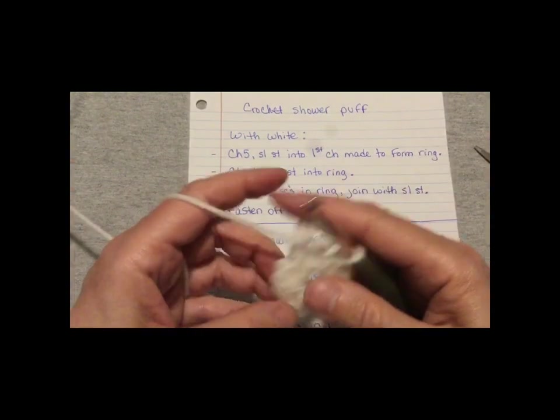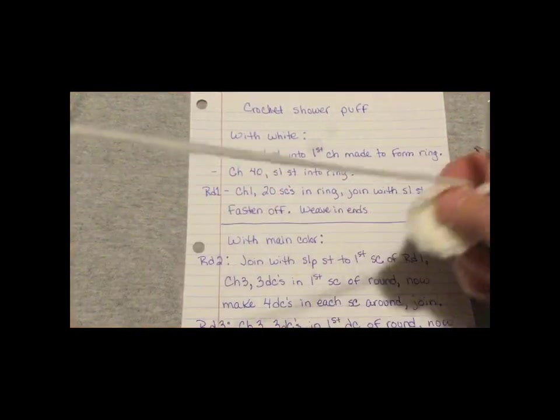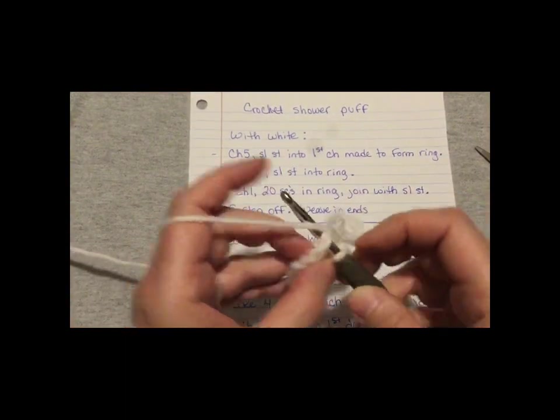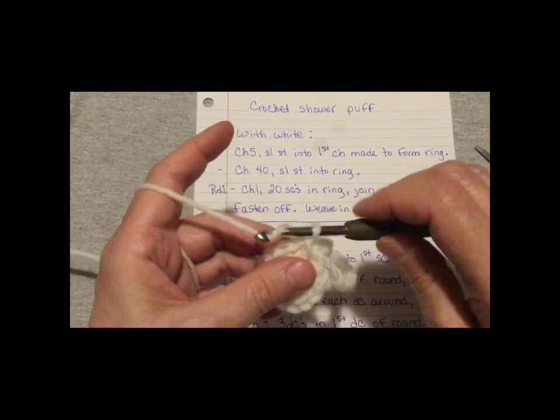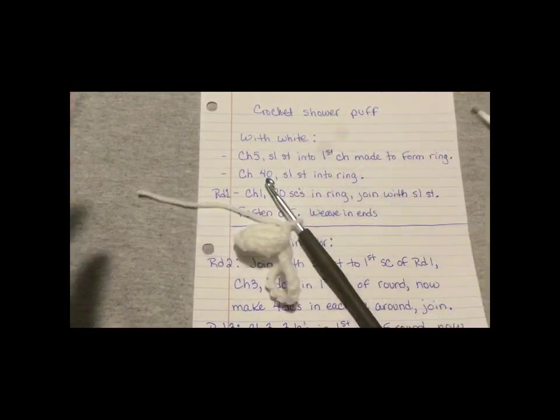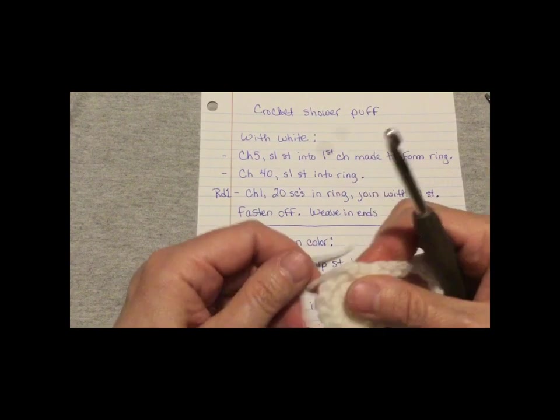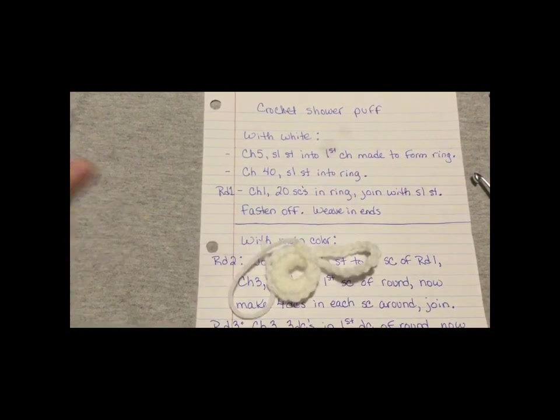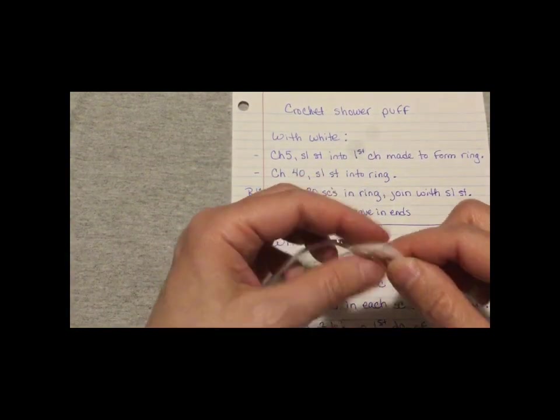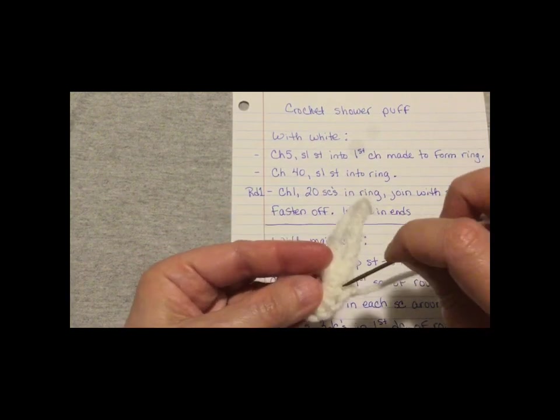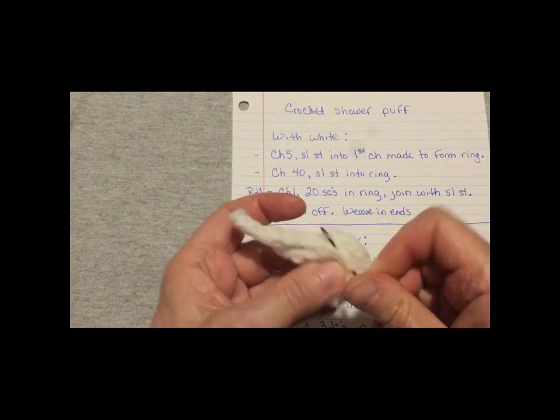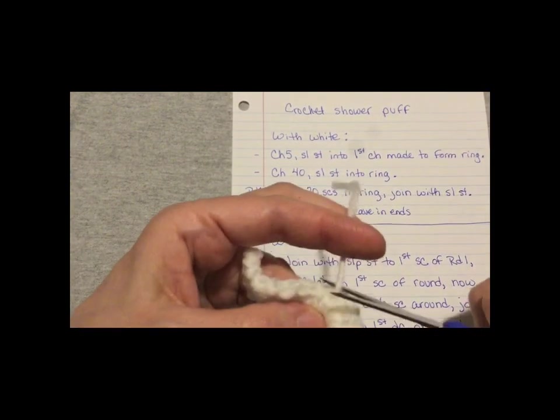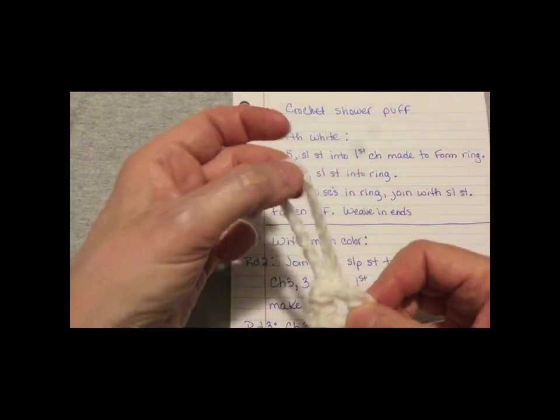So now I'm going to join with a slip stitch. Here's my first single crochet right here. So I'm going to join with that. And it says fasten off and then weave in ends. To fasten off, I slip stitch once, give enough room for the tail, and get my yarn needle. You can do that a couple more times if you'd like. Okay, here we go. We got the beginning part.